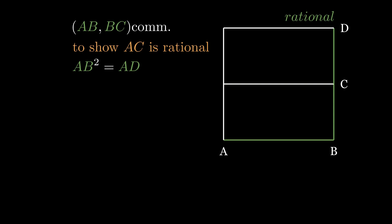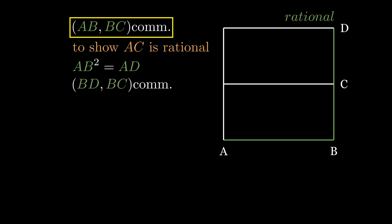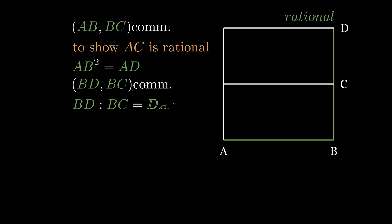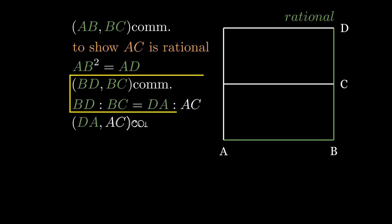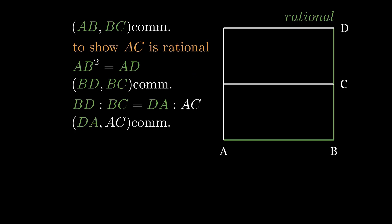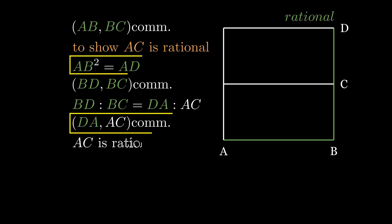BD equals AB, and AB is commensurable with BC, so BD is commensurable with BC. BD to BC is proportional to DA to AC, so DA and AC are commensurable. So AC is rational.